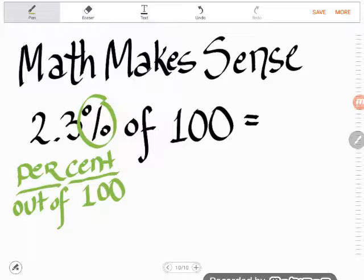And look what this problem asked me to do. It asked me to take 2.3 percent of 100. For every 100, I need 2.3. Okay, well, I only have 100, so I must have 2.3. And it is really, honestly, that simple.